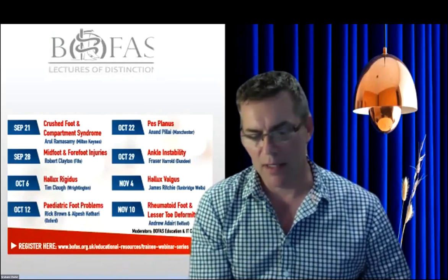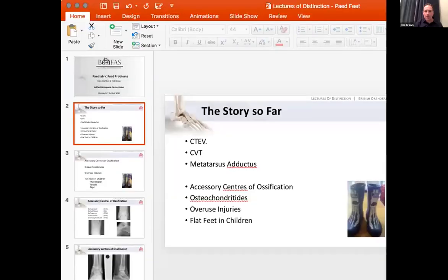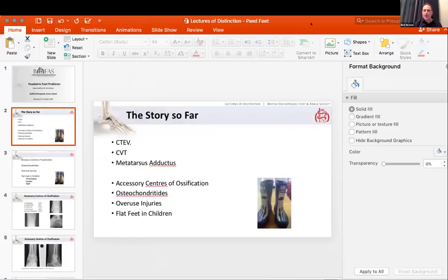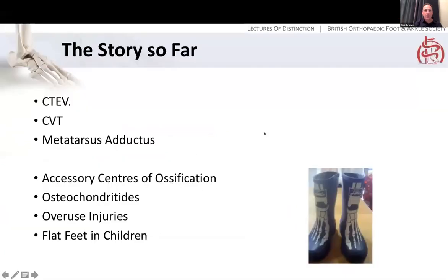We'll move on now to the second half of the evening. I'll hand over to Mr. Rick Brown. Alpesh and I work together as a team, developing a model between paediatric surgeons and the adult foot and ankle surgeon — patients I'll pop in and see when they're 14, because inevitably they will become adults, and it's very helpful for families to have a transition. We've covered clubfeet, CVT, and metatarsus adductus. Over the next 20 minutes I'll cover things particularly peculiar to the older child's foot: accessory centres of ossification which can cause confusion, some of the osteochondritides, overuse injuries, and then flat feet in children — both flexible and rigid.